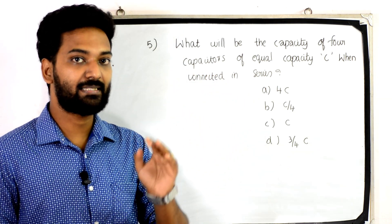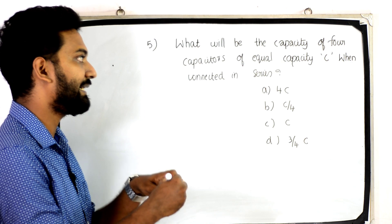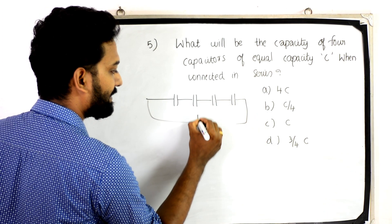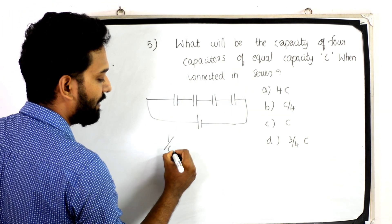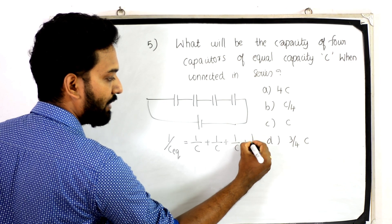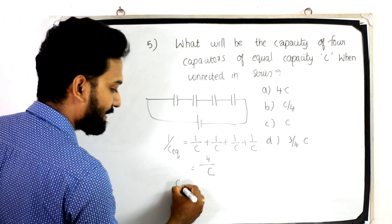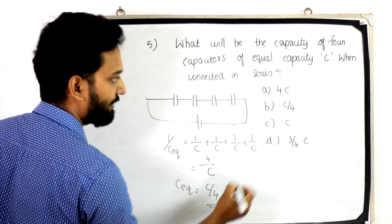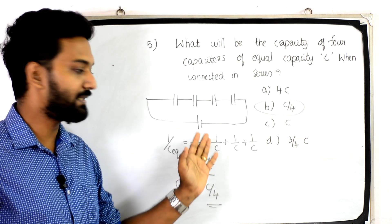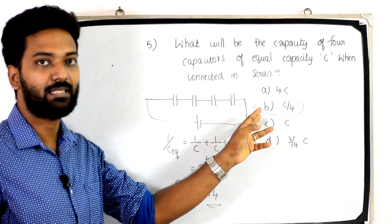The fifth question: What will be the capacity of four capacitors of equal capacity C when connected in series? Options: 4C, C/4, 3/4C. For capacitors in series, 1/C_equivalent = 1/C + 1/C + 1/C + 1/C, giving C_equivalent = C/4. The answer is option B, C/4.